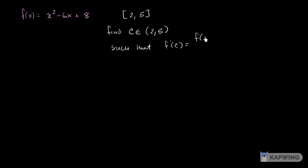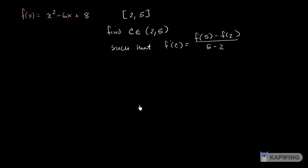So let's show we can find c inside the open interval such that the derivative at c equals the average rate of change, or the slope of the secant line between the two endpoints: f(5) minus f(2) over 5 minus 2. I encourage you to pause and try to find such a c.